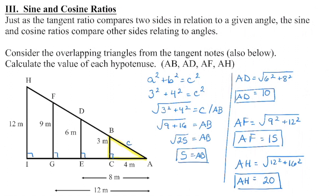There are three primary trigonometric ratios. Last time we spent quite a bit of time developing how the tangent ratio works and how it was derived. We're going to speed up that process a little bit today when we take a look at the two remaining trig ratios, which are the sine ratio and the cosine ratio. Similar to tangent, those ratios are used to compare sides in similar triangles that are right angle triangles.